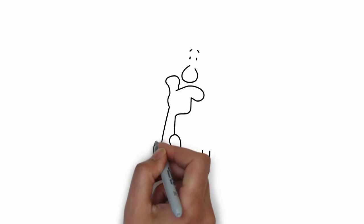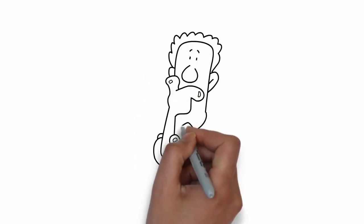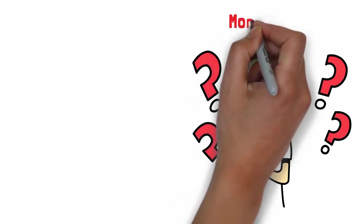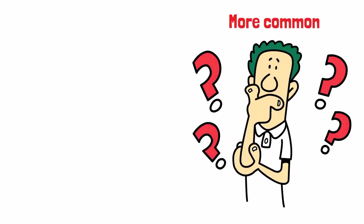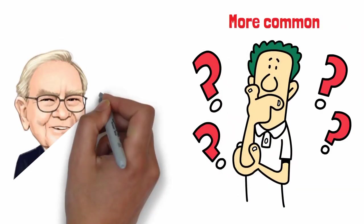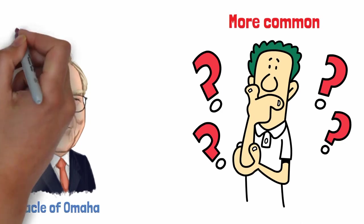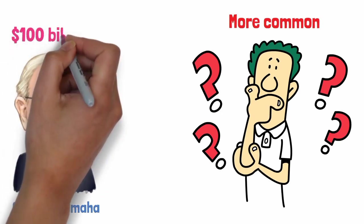Have you ever noticed that some of the wealthiest people on the planet don't live the extravagant lifestyles you'd expect? This intriguing phenomenon is more common than you might think. Take Warren Buffett, for instance. Known as the Oracle of Omaha, Buffett is one of the richest men in the world with a net worth estimated at over $100 billion.